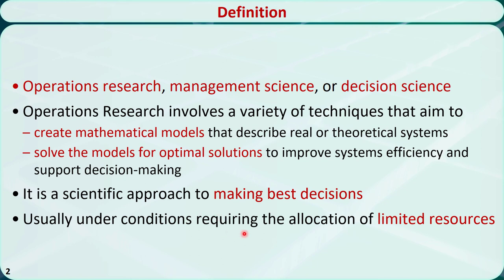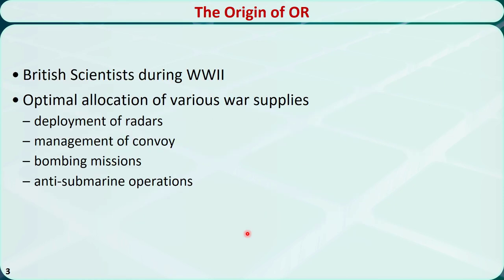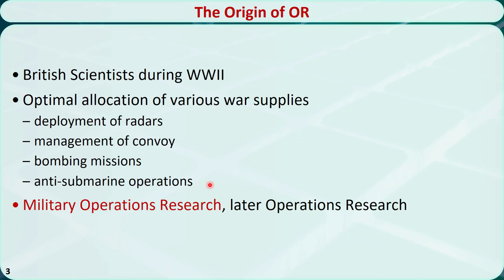Many OR problems involve achieving a certain goal by allocating limited resources. Operations research was originally called military operations research when British scientists started to use it as a tool to allocate various war supplies during World War II. It was used to deploy radars, manage convoys, prioritize bombing missions, and control anti-submarine operations. With more and more civilian applications, the word military was dropped and it is now just operations research.